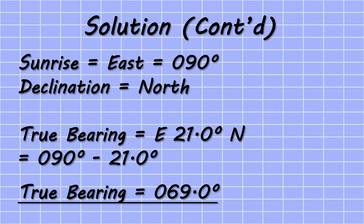It's important to remember that the amplitude is not the same as the true bearing, so the sun will not rise on a bearing of 021. As it's sunrise, we start with an initial bearing in the east — 090 degrees. Since the declination is north, we minus the amplitude from 090 degrees: 090 minus 21 degrees gives a true bearing of 069 degrees true. This is a very valuable tool that allows gyros and compasses to be checked at sunrise and sunset.